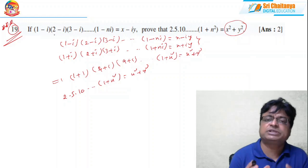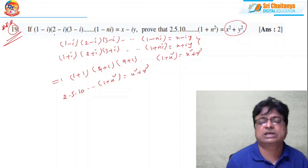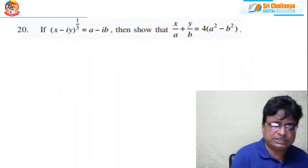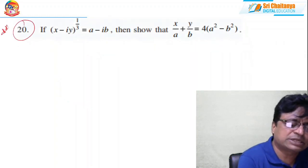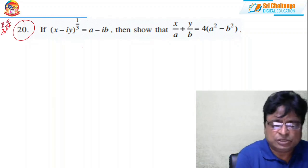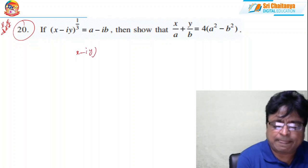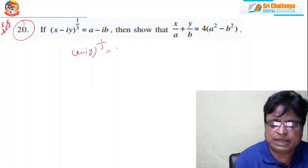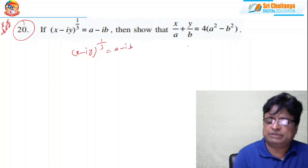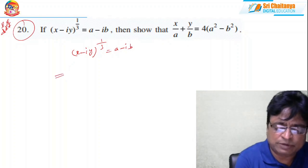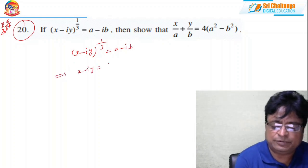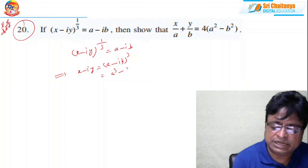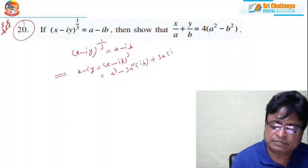Coming to problem 20, also very important and asked in several competitive examinations. Given: (x − iy)^(1/3) = a − ib, show that x/a + y/b = 4(a² − b²). Cubing both sides: x − iy = (a − ib)³ = a³ − 3a²b·i + 3ab²·i² − b³·i³, which expands to (a³ − 3ab²) − i(3a²b − b³).